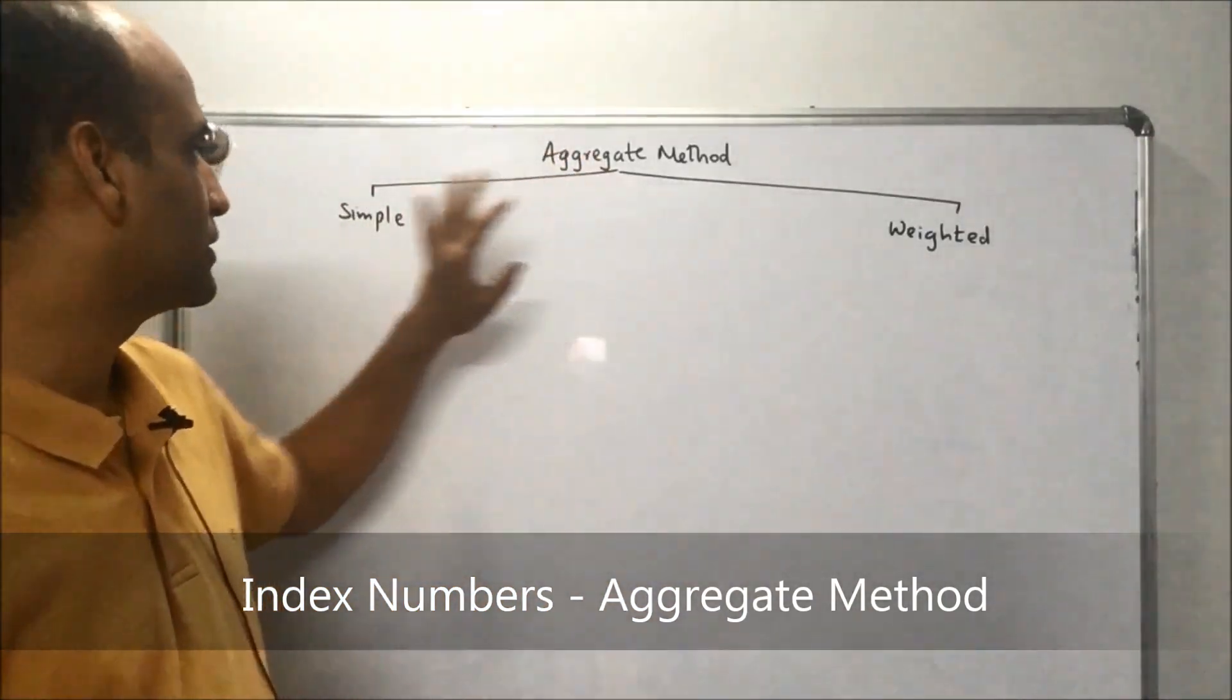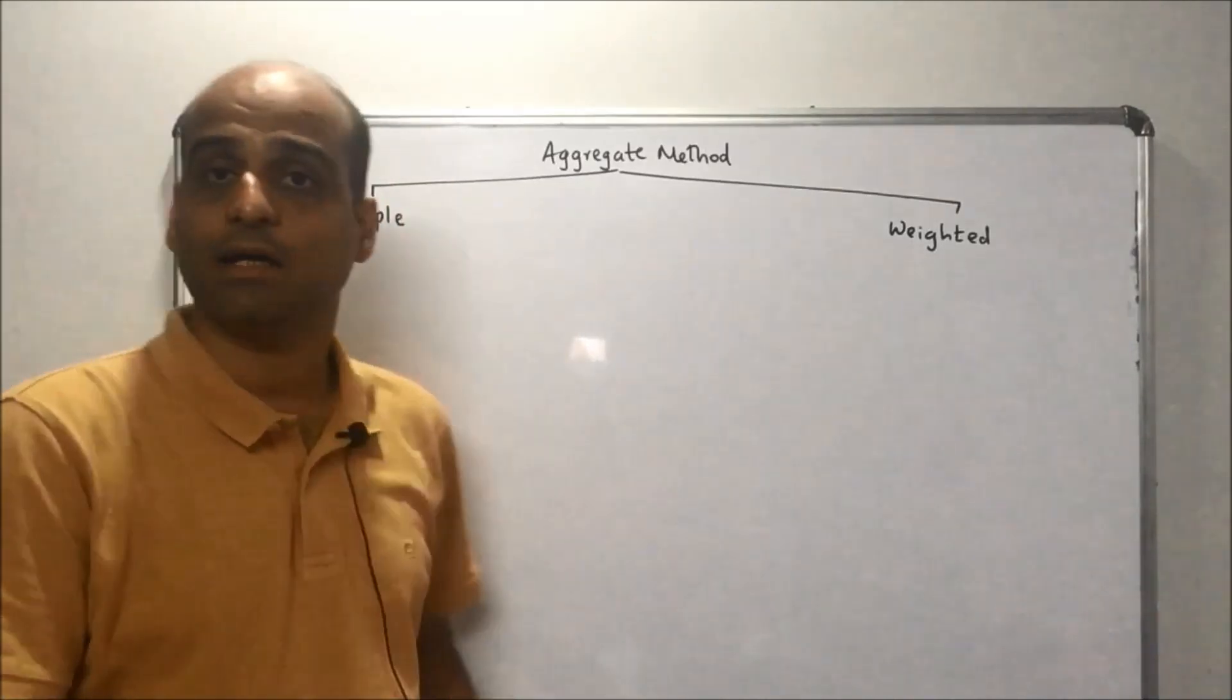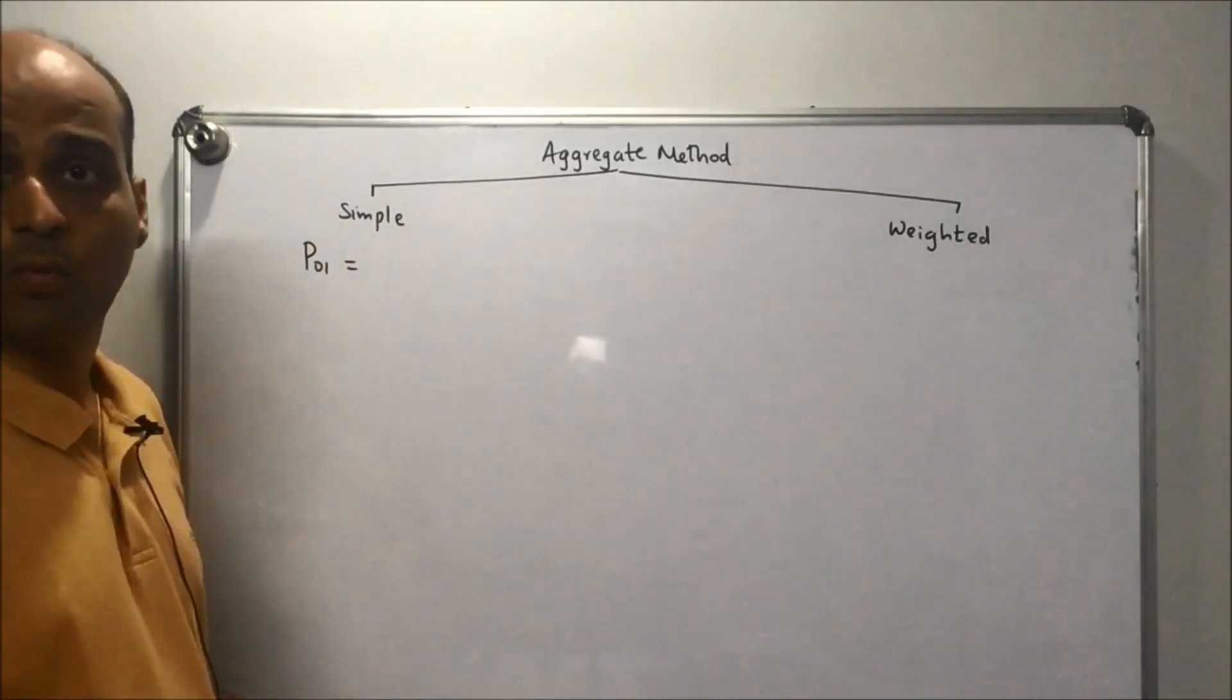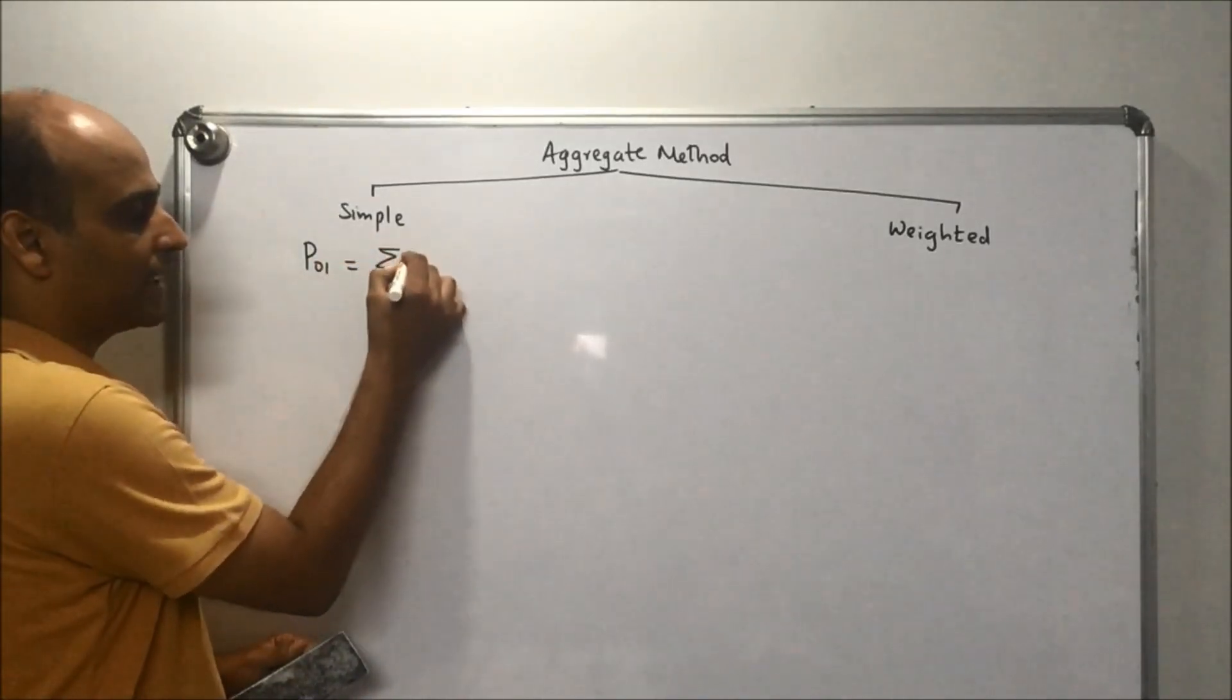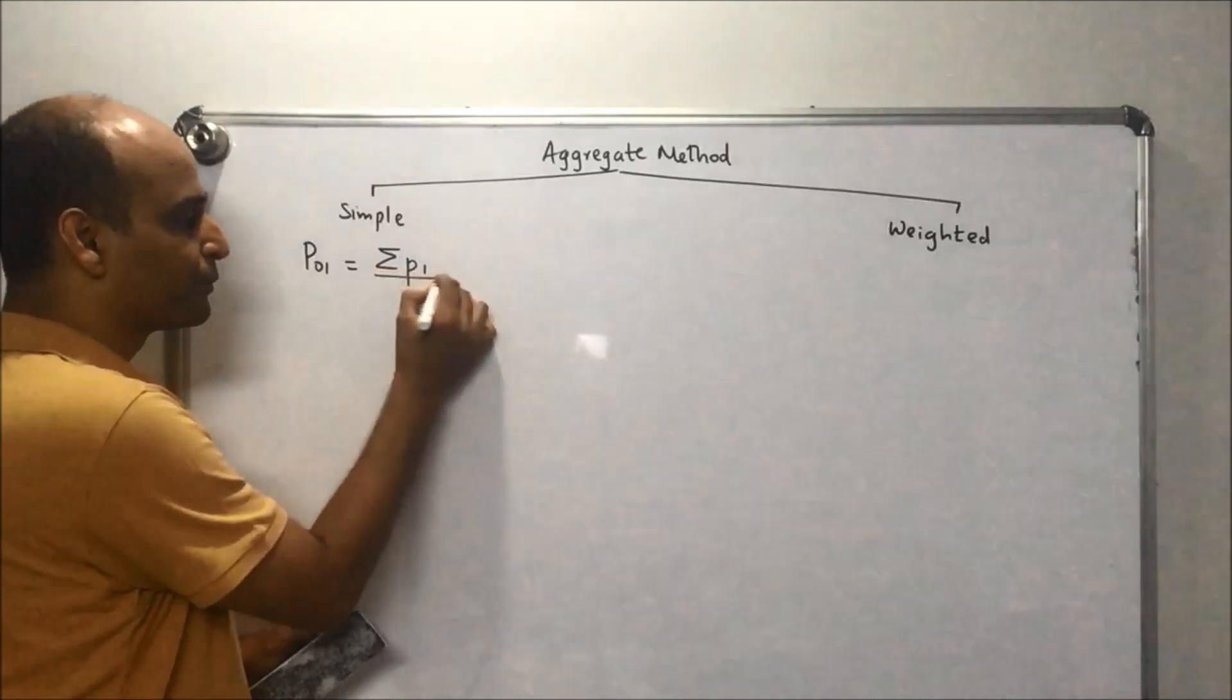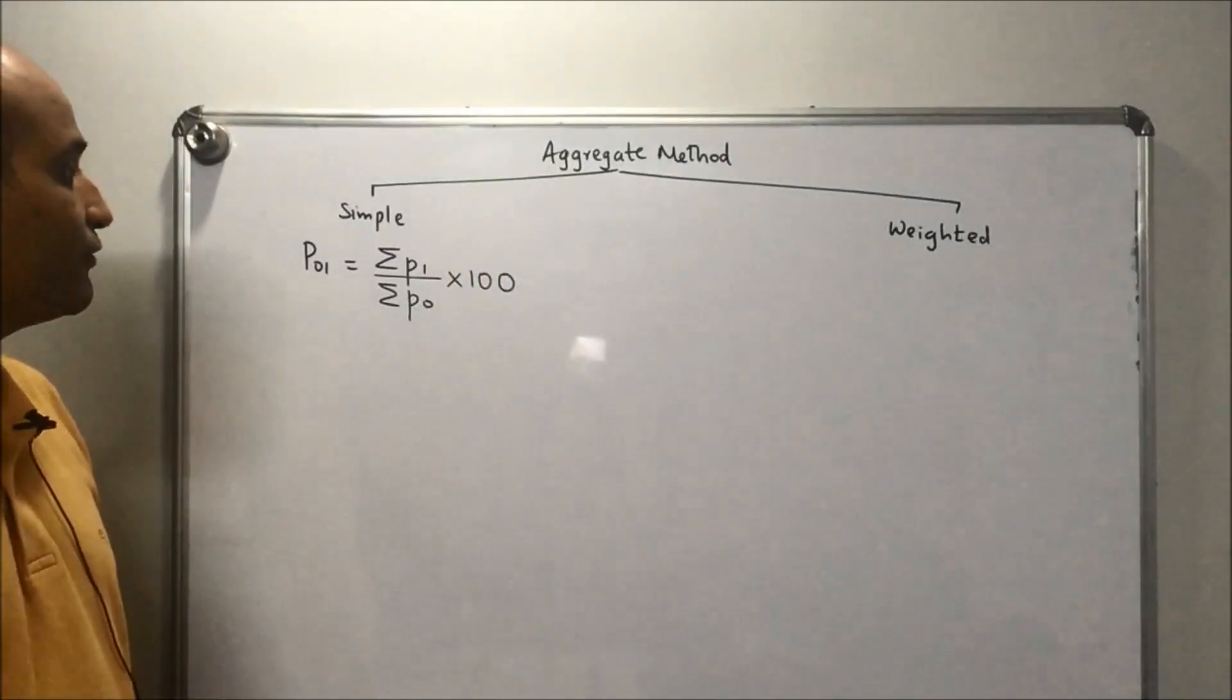As I told you earlier, there are two sections under aggregate method: simple and weighted. We'll see how to construct price index numbers under simple and weighted methods. The simple price index formula is given by P₀₁, the price index of current year on the base year. The formula is summation of P₁ upon summation of P₀ into 100, where P₁ is the current price.